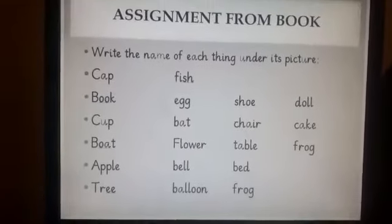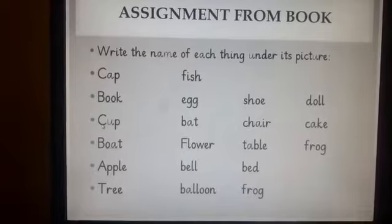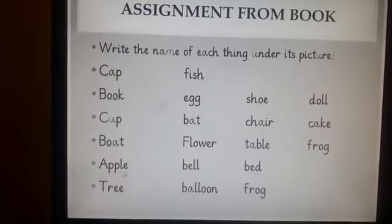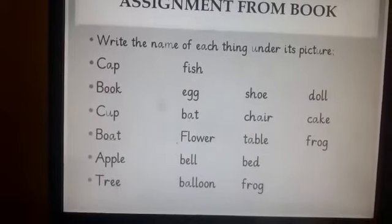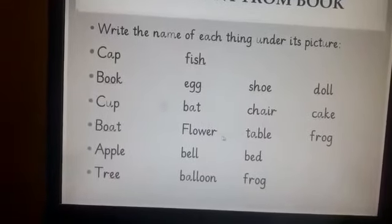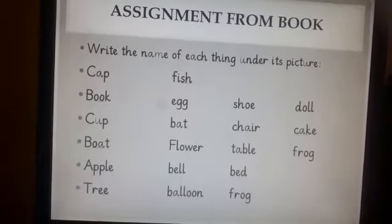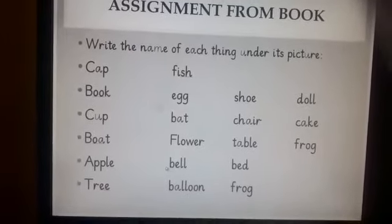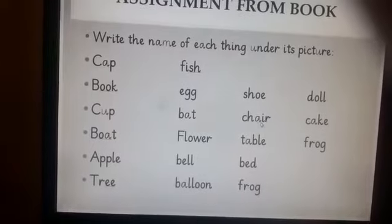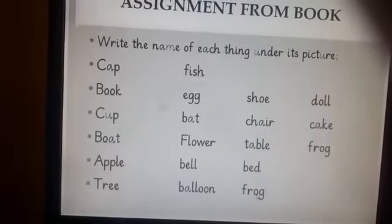Let me help you read the words used on the book pages. Boat — that's a long 'o' sound. Apple — that's a tricky word. Tree. Fish. Egg. Bat. Flower — keep reading it and picture it in your mind. Bell. Balloon. Shoe. Chair. Table. Bed. Frog.